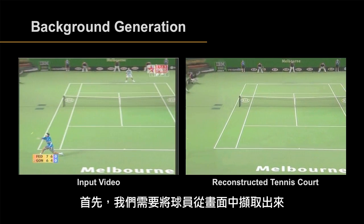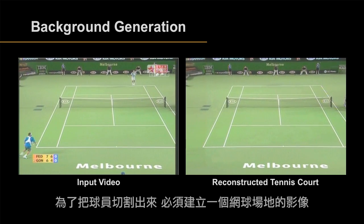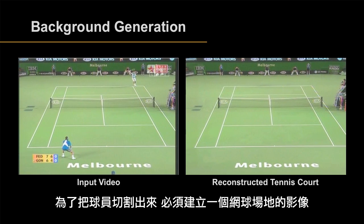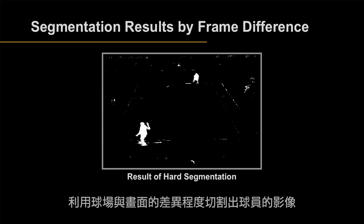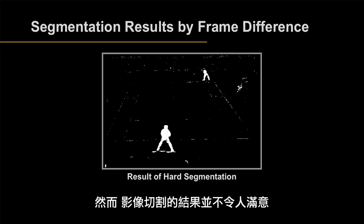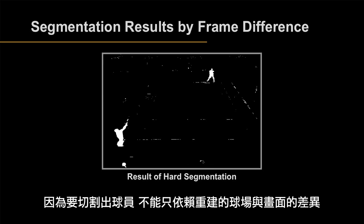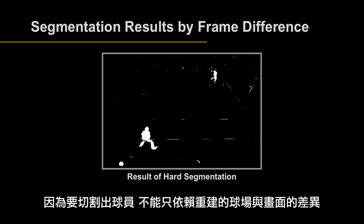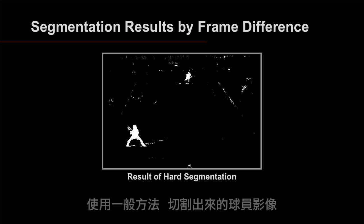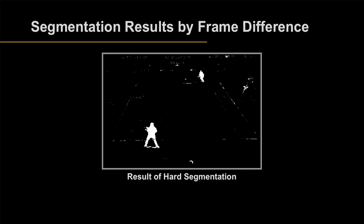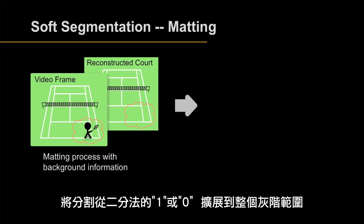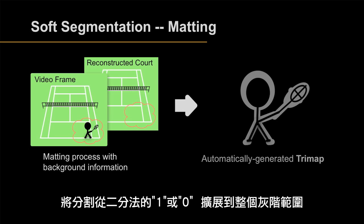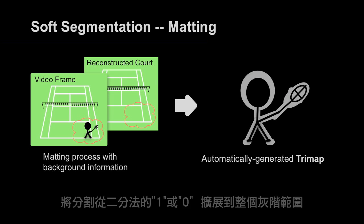First, we need to separate the player and the tennis court apart. For player segmentation, we reconstruct the tennis court and segment the player out of the tennis court by frame difference. However, the result of hard segmentation is not satisfactory because the results are seriously dependent on the threshold, and the segmented players are sometimes split into several components. To improve the segmentation results, we use soft segmentation, which extends the result of segmentation masks from 0 and 1 to the whole grayscale level.